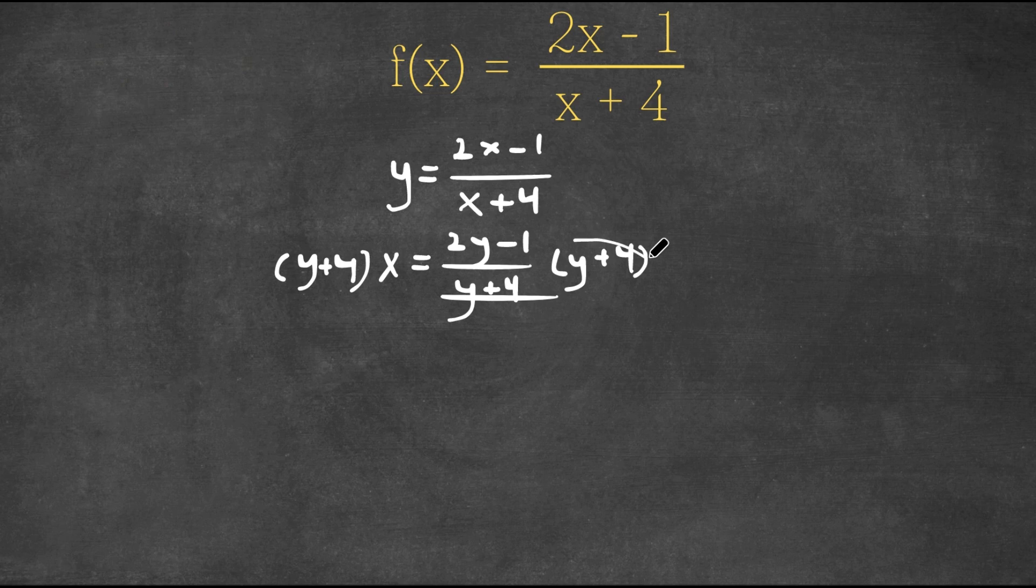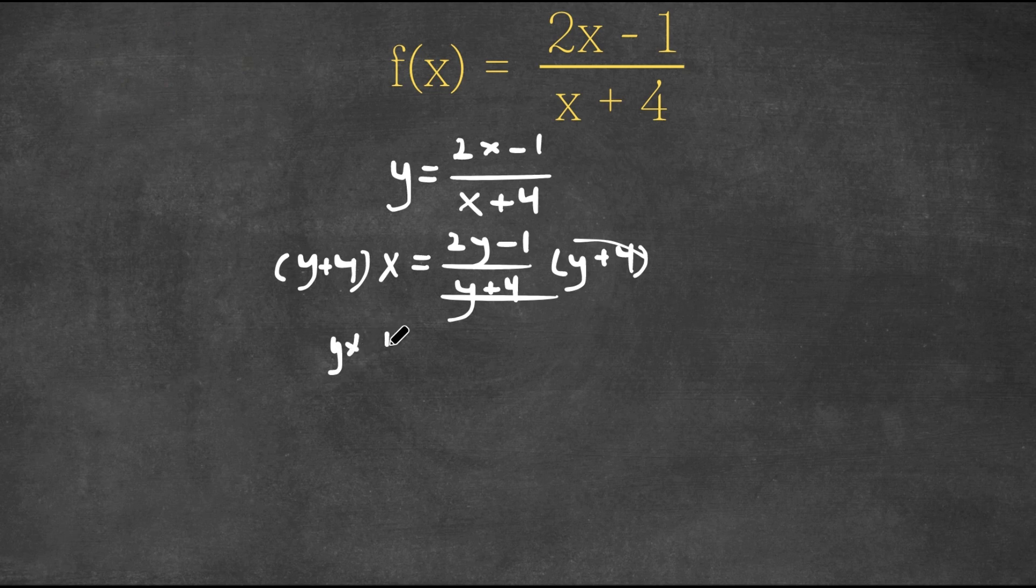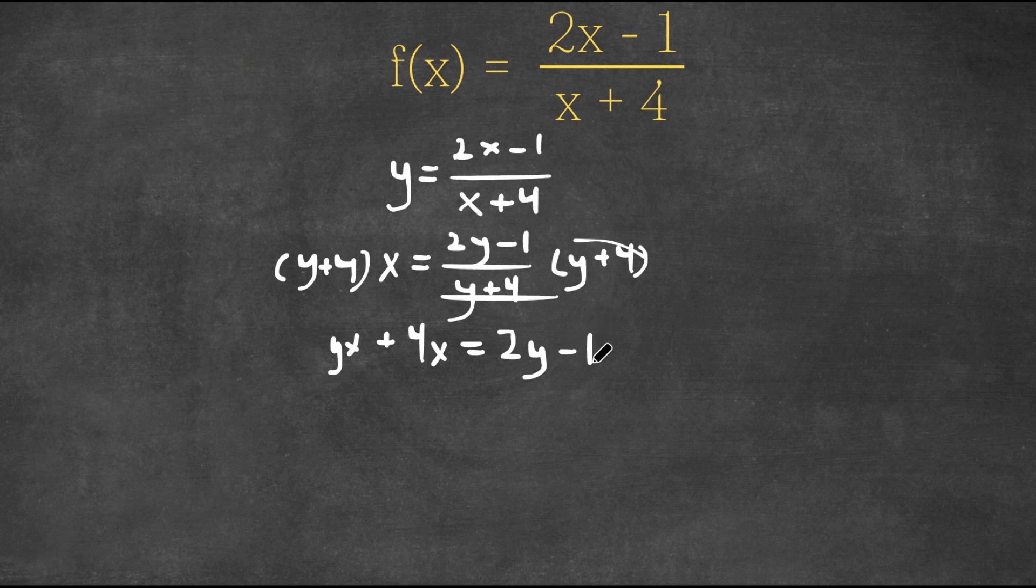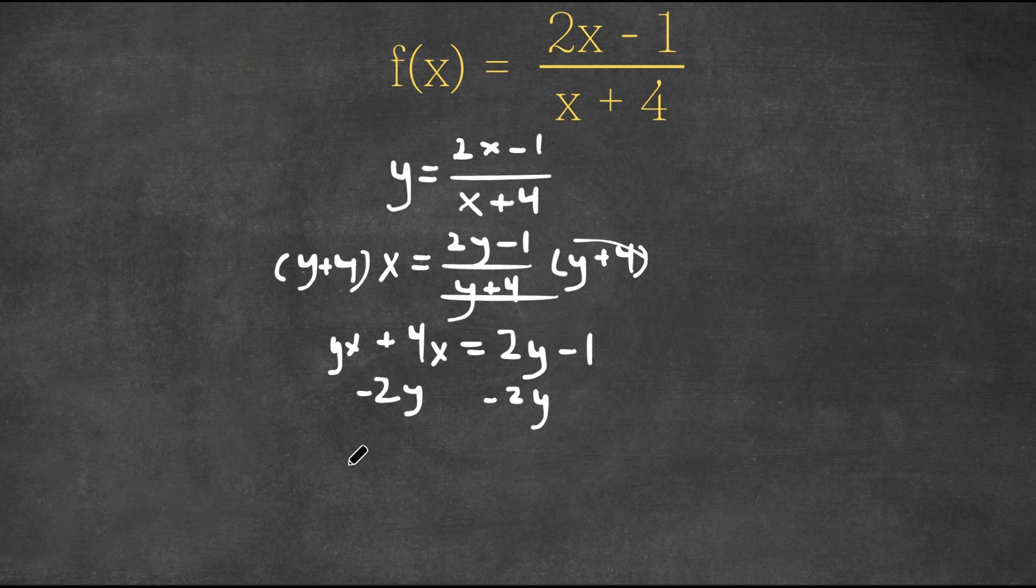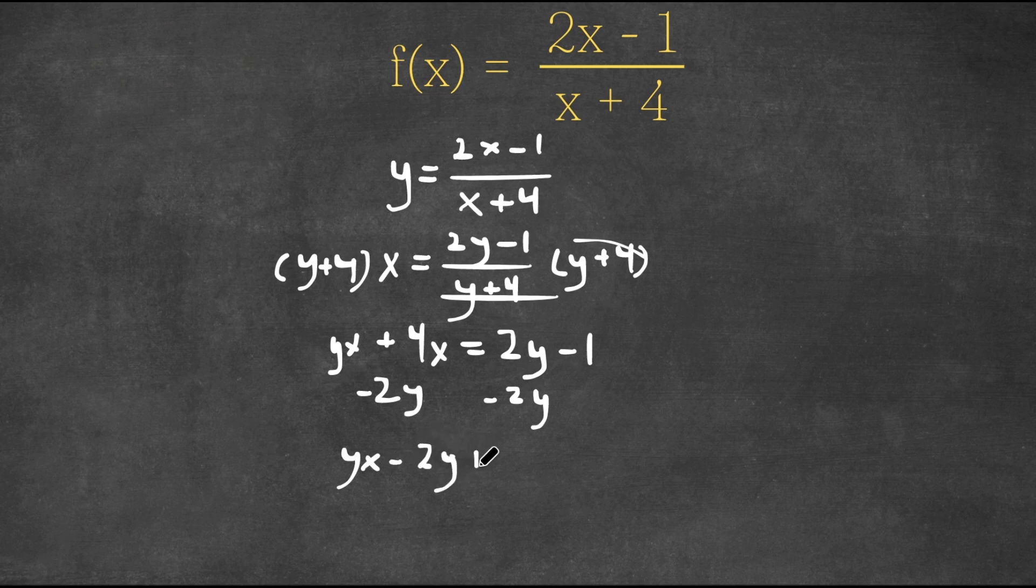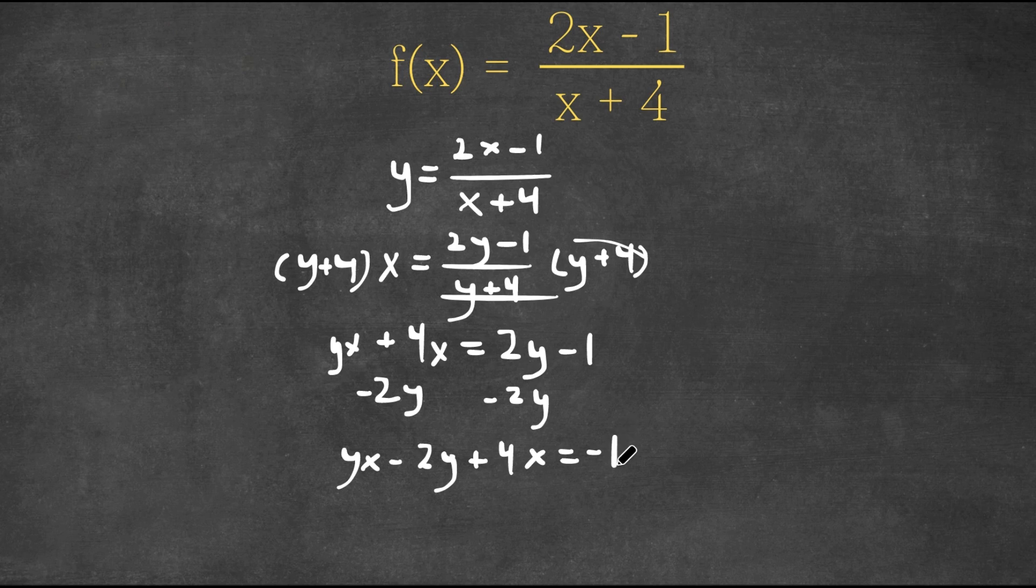So then these two cancel out and we have yx + 4x = 2y - 1. Now I'm going to subtract 2y, so yx + 4x - 2y = -1. And now I'm going to subtract 4x on both sides.